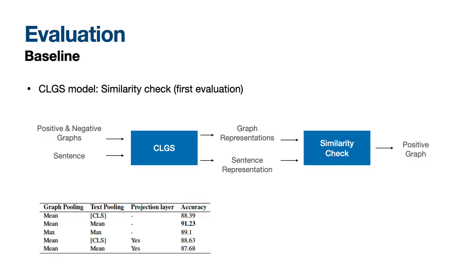The first evaluation step for the CLGS model is a simple similarity check. The trained model should be capable to detect the positive graphs of each sentence, given all the negative graphs. Indeed, the performance is quite good, especially when average pooling is used, the accuracy is over 91%.